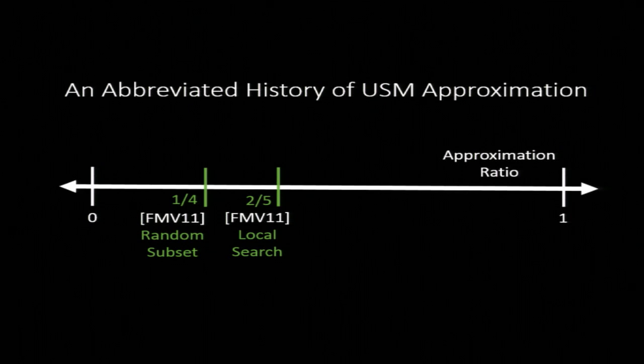And then finally, the last key result is they show that if you're given F as a black box value oracle, then you need to evaluate an exponential number of times to have a hope of doing better than one half. So in 2011, the right answer was somewhere between 0.4 and 0.5. This question was settled after a line of work by this paper by Buchbinder et al in 2015, which showed that there's something we call a double greedy algorithm that gets a 0.5 approximation. So this offline maximization problem has been very well studied.